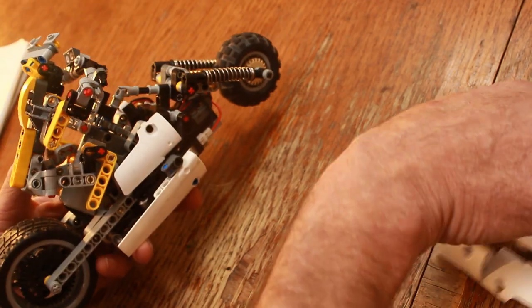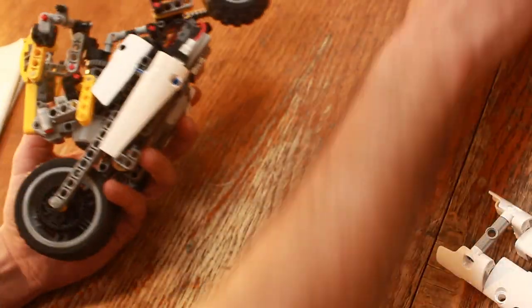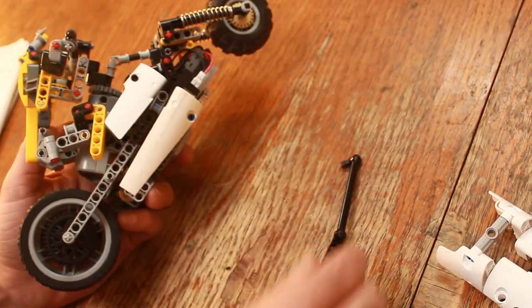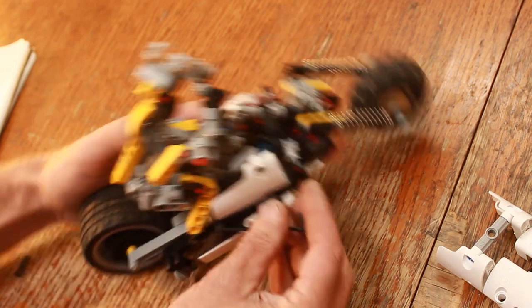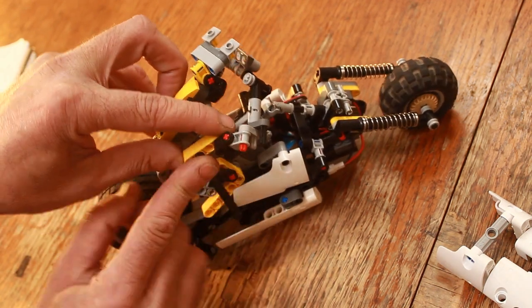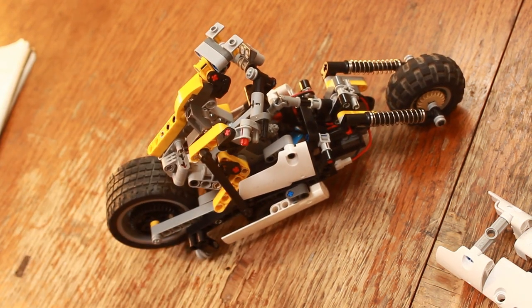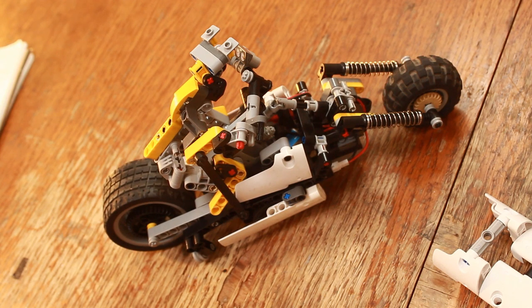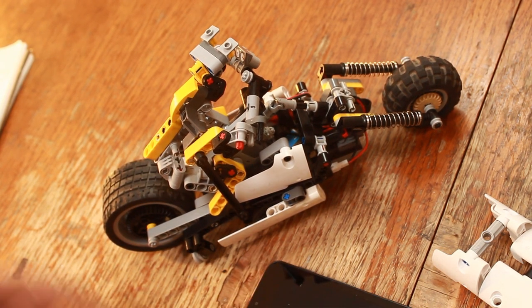You might have noticed in some of that footage that he had this thing on the bike, like a little burnout wheel, and that worked pretty good. I'll show you what's going on here, so that just attached to his arm right there, and then when he tilts, that wheel comes down.